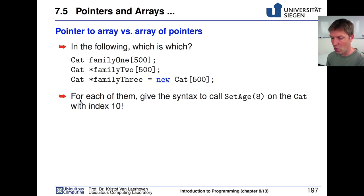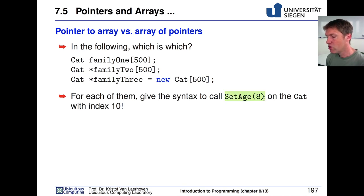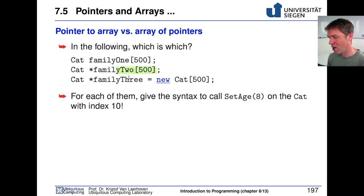Here is an exercise for home which is quite important to see whether you really understand this. For each of those three declarations — family one, family two, and family three — try to give the syntax to call the method setAge for an age of 8 years on the cat with index 10, i.e., the eleventh cat in each array.